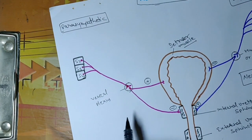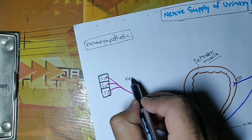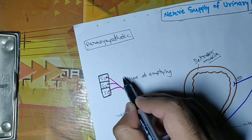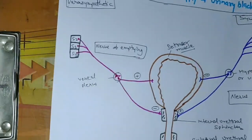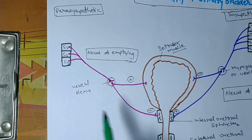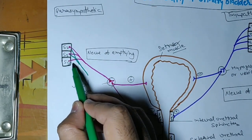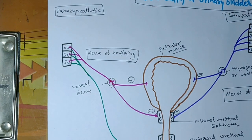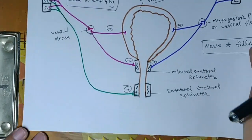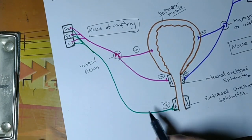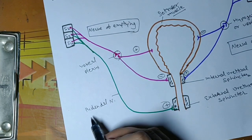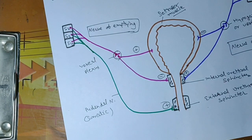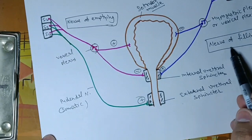So the detrusor muscle will contract, which means it will empty the bladder — so this is also known as the nerve of emptying the bladder. From the same segments S2, S3, S4, one other nerve will arise and go to the external urethral sphincter, providing motor innervation to it. This nerve is known as the pudendal nerve, which provides somatic innervation — meaning it is motor to the external urethral sphincter, giving voluntary control of contraction.